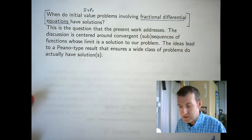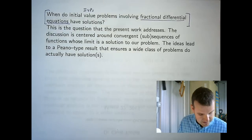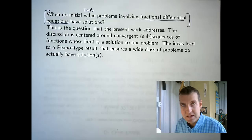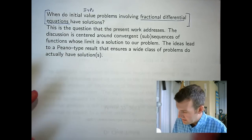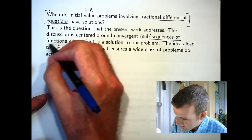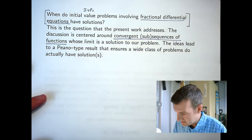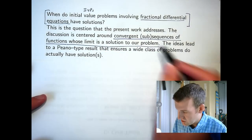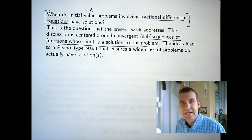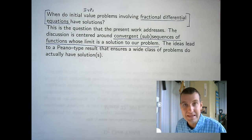To answer this question, I'm going to apply the Arzela-Ascoli and Weierstrass approximation theorems. Essentially what we do is show that we can set up sequences of functions that have uniformly convergent subsequences, and whose limit is a solution to our problem. So the question of existence of solutions just comes down to the existence of a limit and whether or not that limit has certain properties.